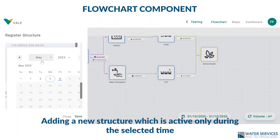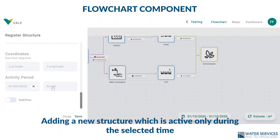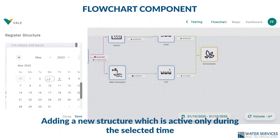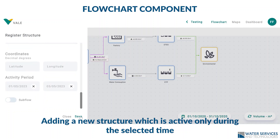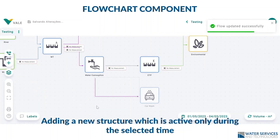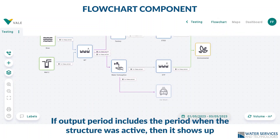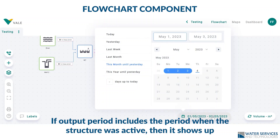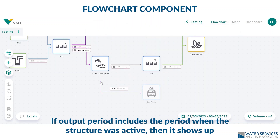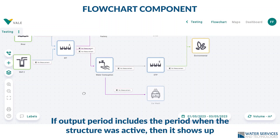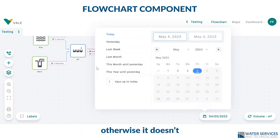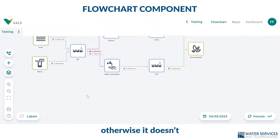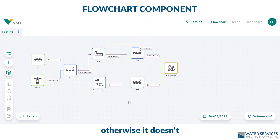You can activate or deactivate a structure at any time. Here we add a car washer, which is active for only a period of time. If you want to visualize flow rates for a period of time where this structure was active, then it shows up. Otherwise, it doesn't. This illustrates the total flexibility of the flow diagram.